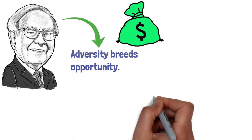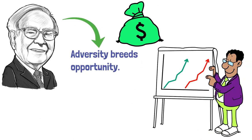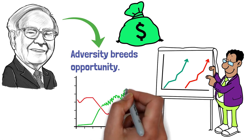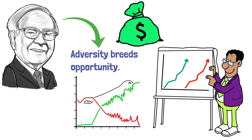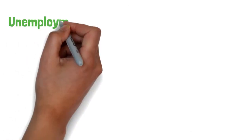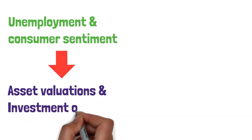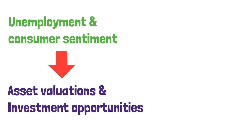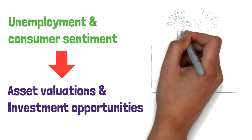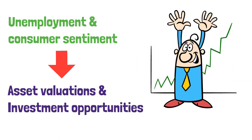In essence, understanding the economic landscape entails recognizing the interconnectedness of various factors shaping market dynamics during recessions. From unemployment and consumer sentiment to asset valuations and investment opportunities, a comprehensive grasp of these elements empowers investors to navigate the turbulent waters of economic downturns with confidence and resilience.